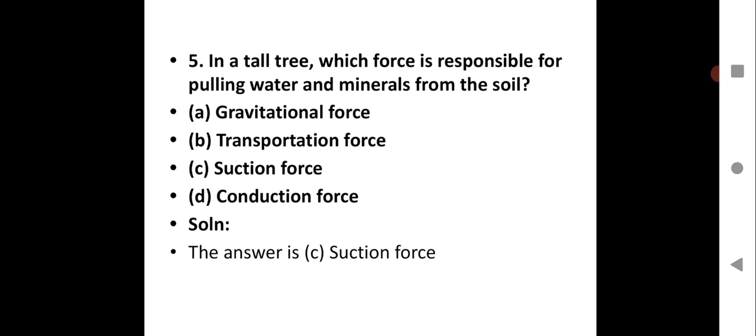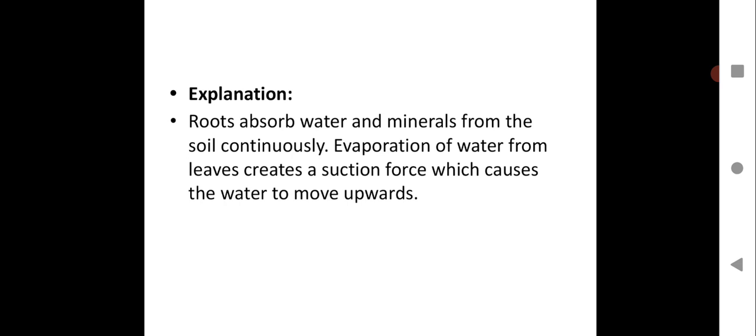Explanation: Roots absorb water and minerals from the soil continuously. Evaporation of water from leaves creates suction force because the leaves continuously do transpiration with the help of stomata. Water vapor is given out and there will be a force created because of lack of water on the upper part of the plant or the tree. That's why the suction pull is created which causes the water to move upwards.